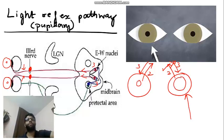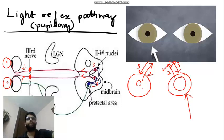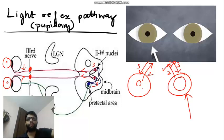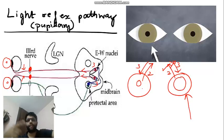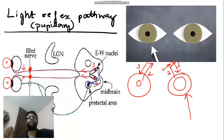If the third nerve causes constriction of the pupil, in third nerve palsy the pupil is dilated — that is one of the features of third nerve palsy and that is anisocoria. In diabetes and hypertension, the pupil remains normal in third nerve palsy. The explanation is that pupillary fibers are peripheral in the third nerve. In microangiopathy from diabetes or hypertension, the vasa nervorum supplies the central part of the third nerve, so peripheral pupillary fibers are spared.